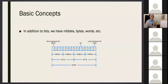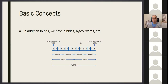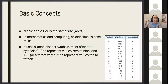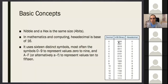The byte is eight bits long, and the word by definition is 16 bits long — very simple definitions. A nibble has four bits, and hexadecimal digits are base 16 — they also have four bits. So each nibble has a corresponding hex digit. The hexadecimal representation of 0000 is 0, and 0001 is 1.